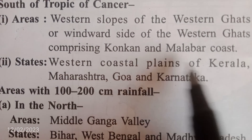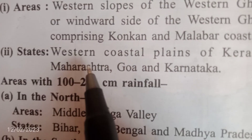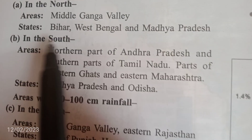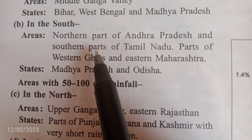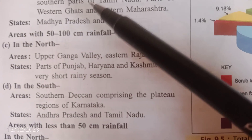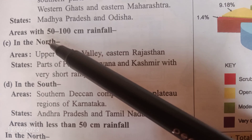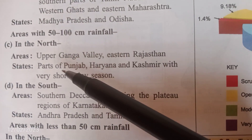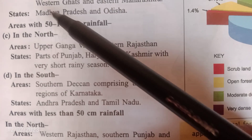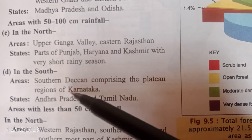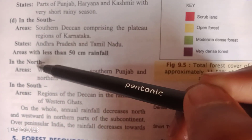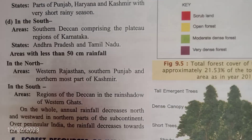Coastal plains of Kerala, Karnataka, Goa, and Maharashtra also receive over 200 centimeters of rainfall. Areas with 100 to 200 centimeters of rainfall in northern India include the mid-Ganga valley; states include Bihar and West Bengal. In south India, this includes the northern part of Andhra Pradesh and southern parts of Tamil Nadu; states include Madhya Pradesh and Odisha. Areas with 50 to 100 centimeters in northern India include the upper Ganga valley, eastern Rajasthan, and parts of Punjab, Haryana, and Kashmir. In south India, the southern Deccan plateau regions of Karnataka receive 50 to 100 centimeters; states include Andhra Pradesh, Tamil Nadu, and Karnataka.